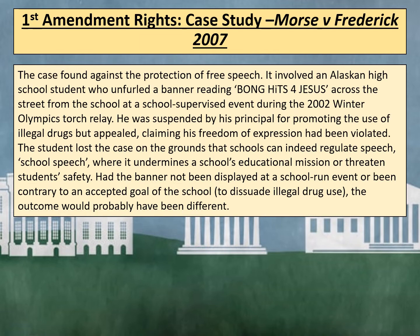Now we can look at the case study of Morse versus Frederick in 2007. The case found against the protection of free speech. It involved an Alaskan high school student who unfurled a banner reading 'Bong Hits 4 Jesus' across the street from school at a school-supervised event during the 2002 Winter Olympics torch relay. He was suspended by his principal for promoting the use of illegal drugs, but appealed, claiming his freedom of expression had been violated. The student lost the case on the grounds that schools can indeed regulate speech where it undermines a school's educational mission or threatens students' safety. Had the banner not been displayed at a school-run event or been contrary to an accepted goal of the school, the outcome would have probably been different.